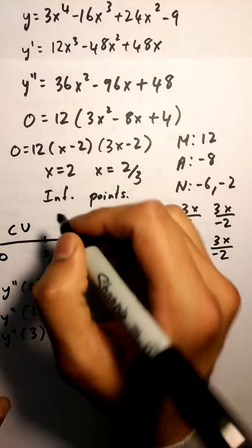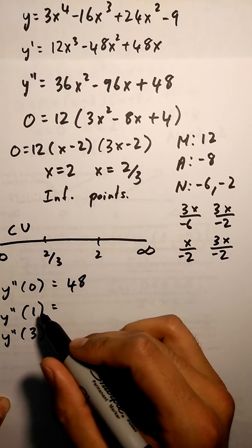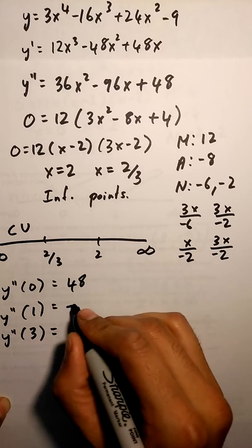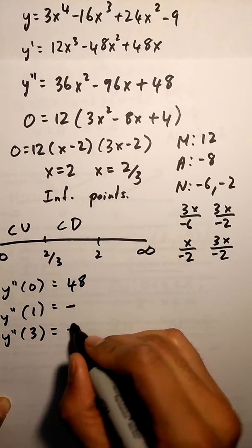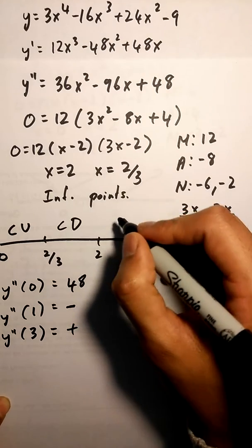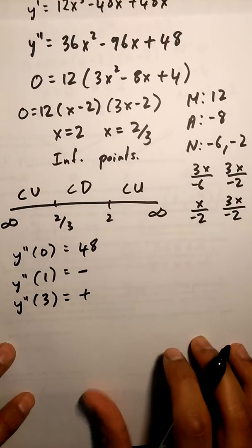So that's 48, which makes this concave up. Y double prime of 1 is a negative number, so that's going to be concave down. Y double prime of 3 is a positive number, so that's going to make this concave up.